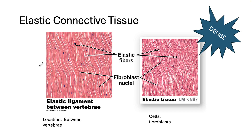Elastic connective tissue contains a lot of elastic fibers running parallel to each other, giving it a very dense appearance with little ground substance space between the cells. You find this tissue between vertebrae in the spine, but also in the lungs, in the walls of arteries such as the aorta, in hollow organs like the heart and stomach, and in the airways — places where things need to expand and contract again. The cells in elastic tissue are also called fibroblasts.